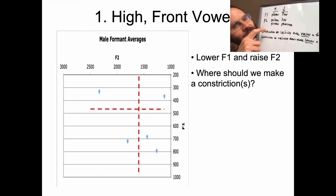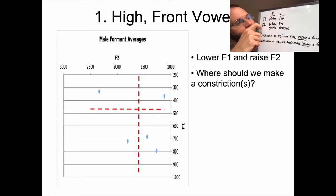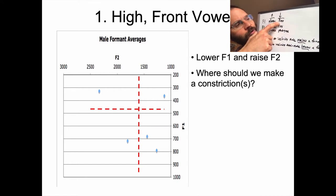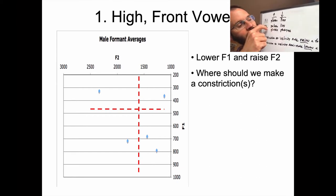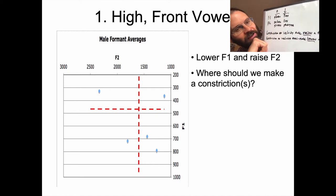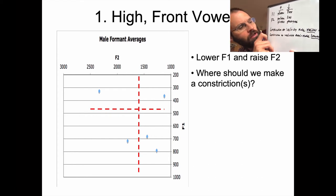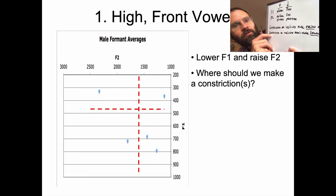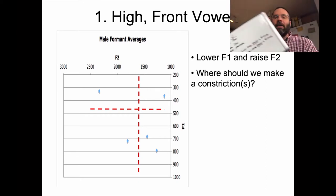The idea here is what consequences constrictions at various locations have on both F1 and F2. For F1: to raise F1, constrict at the glottis or somewhere close to it; to lower F1, constrict at the lips. For F2: to raise it, constrict at the palate or the glottis; to lower it, constrict at the lips or the pharynx. To raise a formant, constrict at a velocity node; to lower a formant, constrict at a velocity antinode — this lines up places of articulation with nodes and antinodes in the standing wave.